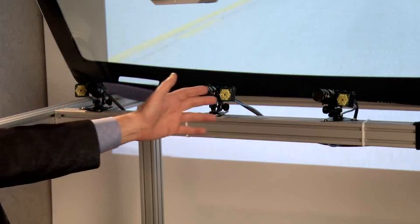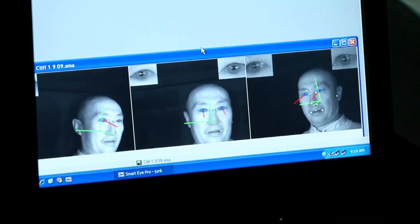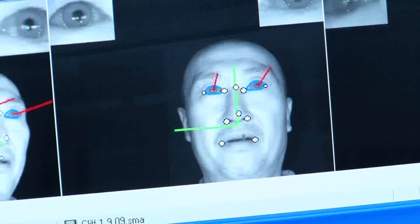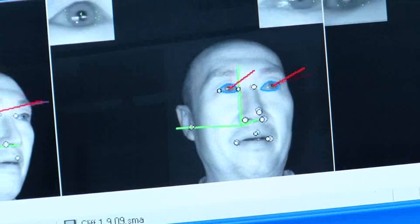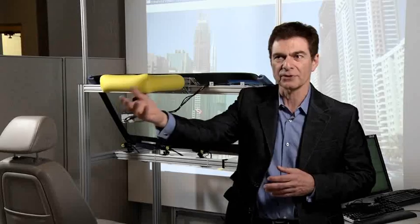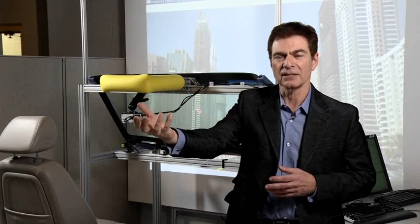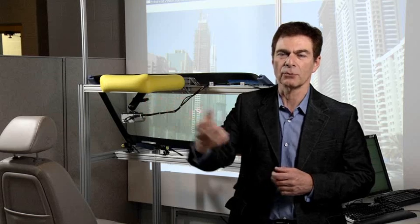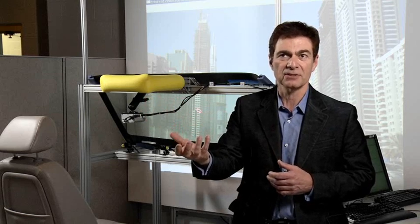As well as cameras in the vehicle to track a driver's position in space, so that we can align the image that we draw on the transparent display with external objects in the real world, therefore augmenting or highlighting those objects to enhance the driver's ability to see them.